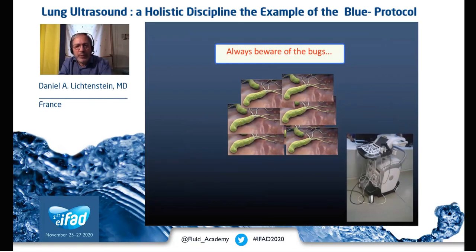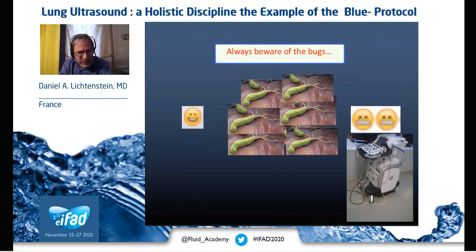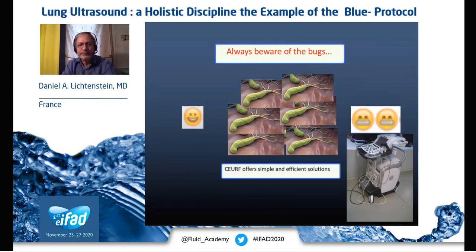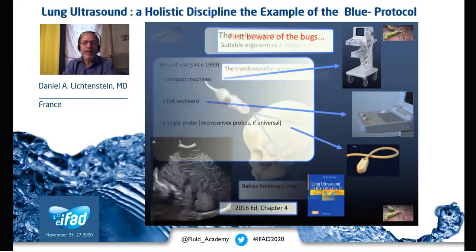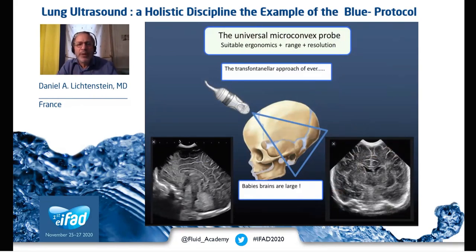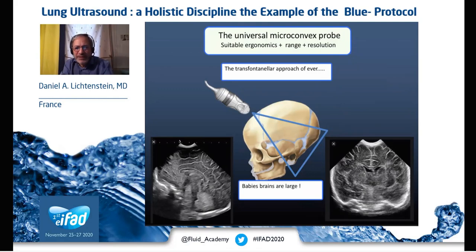Beware of equipment issues — not for the current patient but for future patients. We do not use machines that, especially in the pandemic era, are not devoted to making a clean discipline. At SURF we propose compact machines, flat keyboards, and the single micro-convex probe — because this probe is universal, with perfect ergonomics, and the perfect range and resolution for making this transfrontal approach that gives excellent definition. This is the image we have had from critical ultrasound for more than three decades.